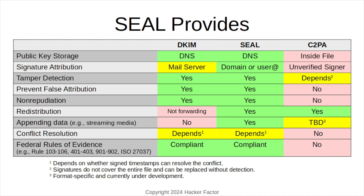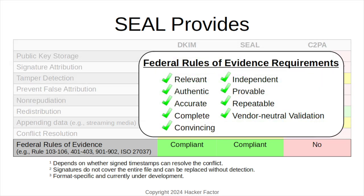DKIM and SEAL may address conflicting claims of ownership if the signed timestamp can resolve the issue. C2PA cannot do this because any C2PA date information can be set by the unknown user, making it unverifiable.